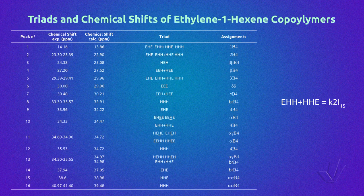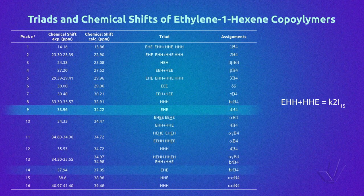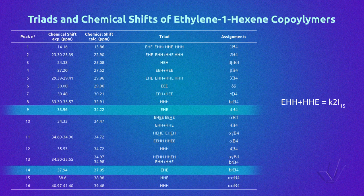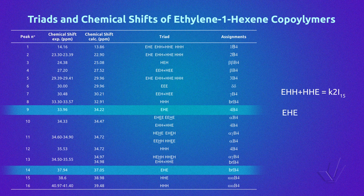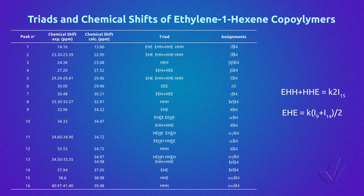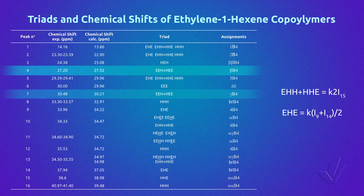Returning to the table again, we can see that the triad EHH is represented by peaks 9 and 14, so we can write the following equation. Triads EEEH plus HEE are represented by peaks 4 and 7, so we can write the equation.